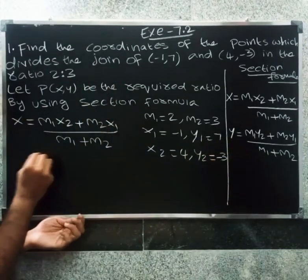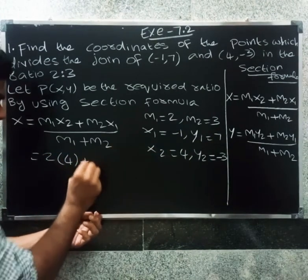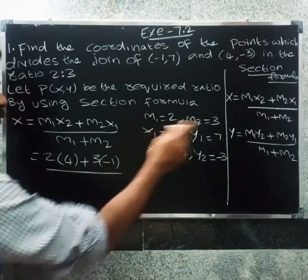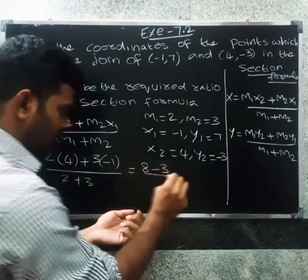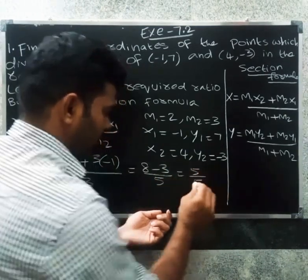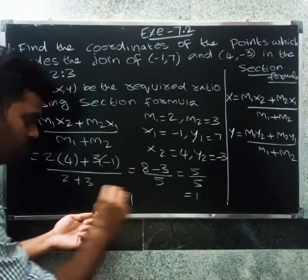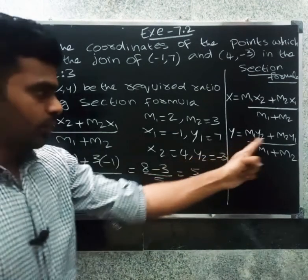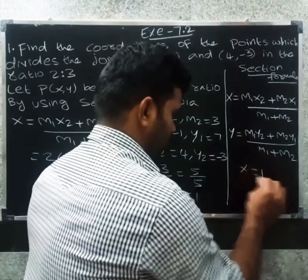So x = (m1·x2 + m2·x1) / (m1 + m2) = (2×4 + 3×(-1)) / (2+3) = (8 - 3) / 5 = 5/5 = 1. So x = 1.